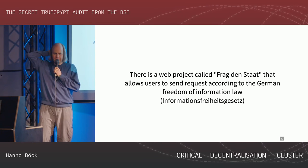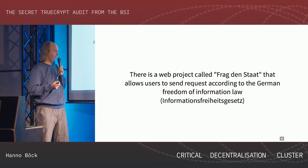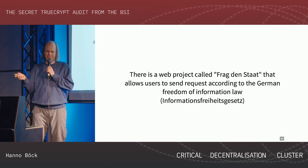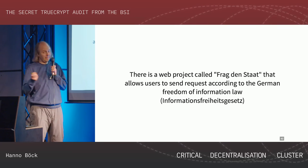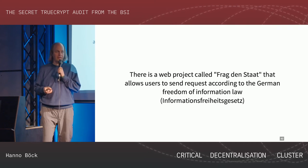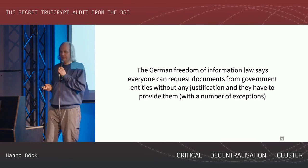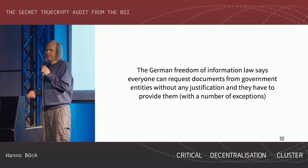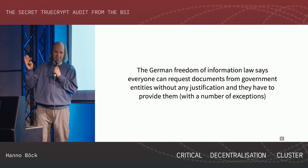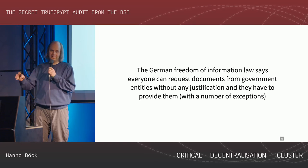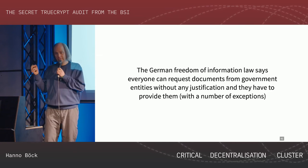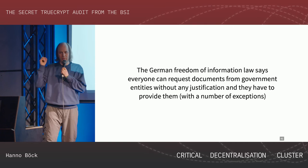So why did I learn about this? There's a web project called Frag den Staat - which is very nice - where you can ask government agencies to give you documents. There's a law in Germany called the Informationsfreiheitsgesetz, which translates to something like 'freedom of information law.' That law says basically: if the government has a document and you want to see it, you can get it. There are a few exceptions, but the default is government has a document, you want to see it, they have to give it to you or have a good reason why not. This should be more widely known - it's a very important thing for government transparency.